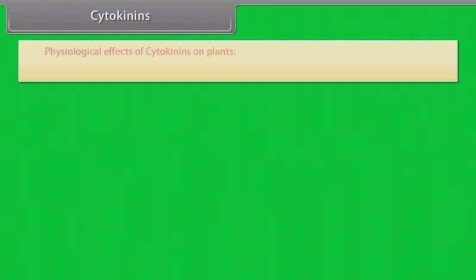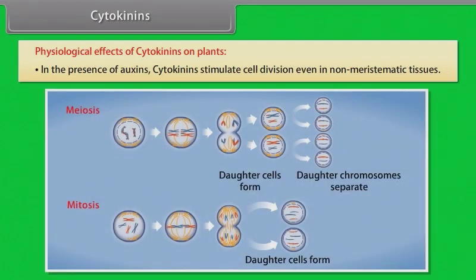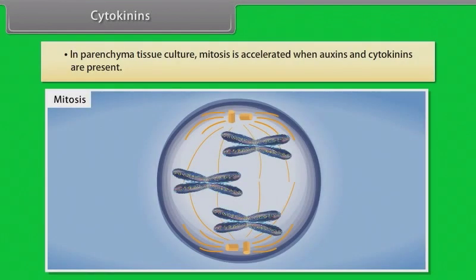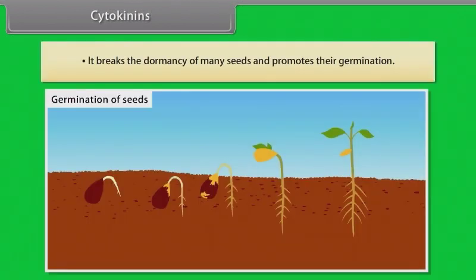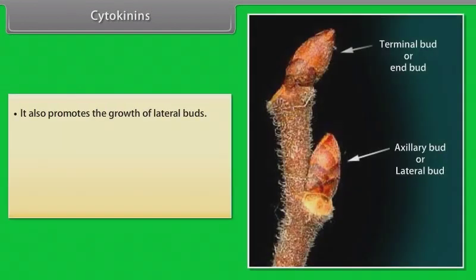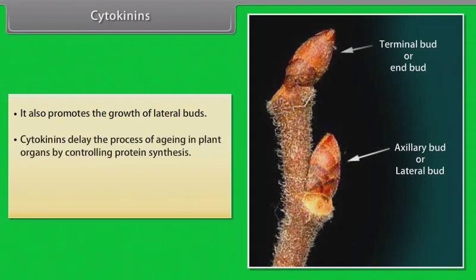Cytokinins. Physiological effects of cytokinins on plants: in the presence of auxins, cytokinins stimulate cell division even in non-meristematic tissues. In parenchyma tissue culture, mitosis is accelerated when auxins and cytokinins are present. It breaks the dormancy of many seeds and promotes their germination. It also promotes the growth of lateral buds. Cytokinins delay the process of aging in plant organs by controlling protein synthesis. It also helps in accumulation of salt in plant cells.